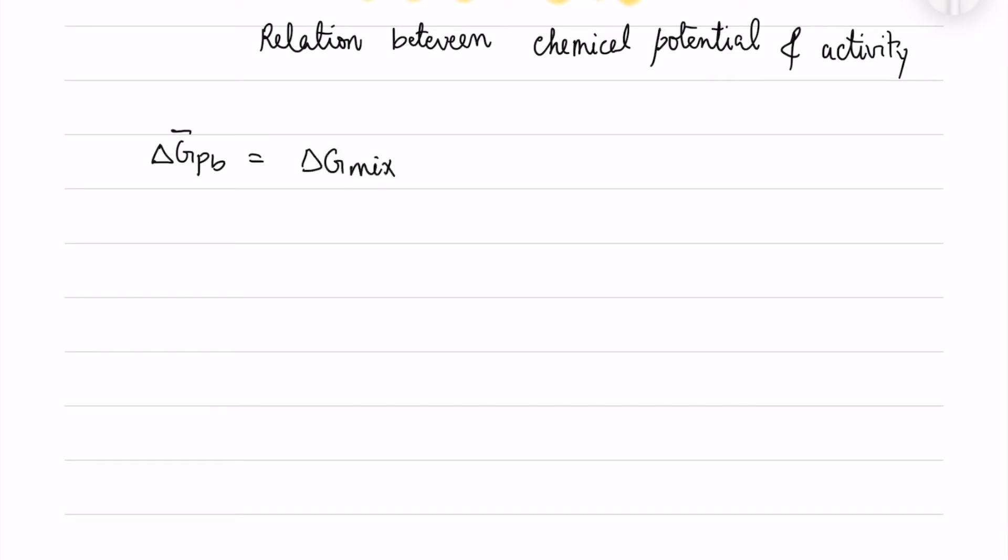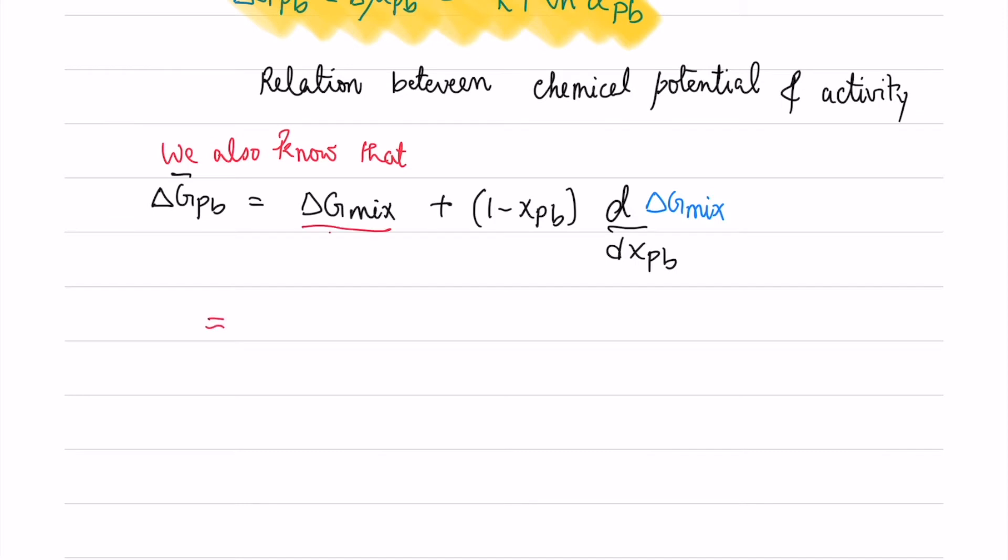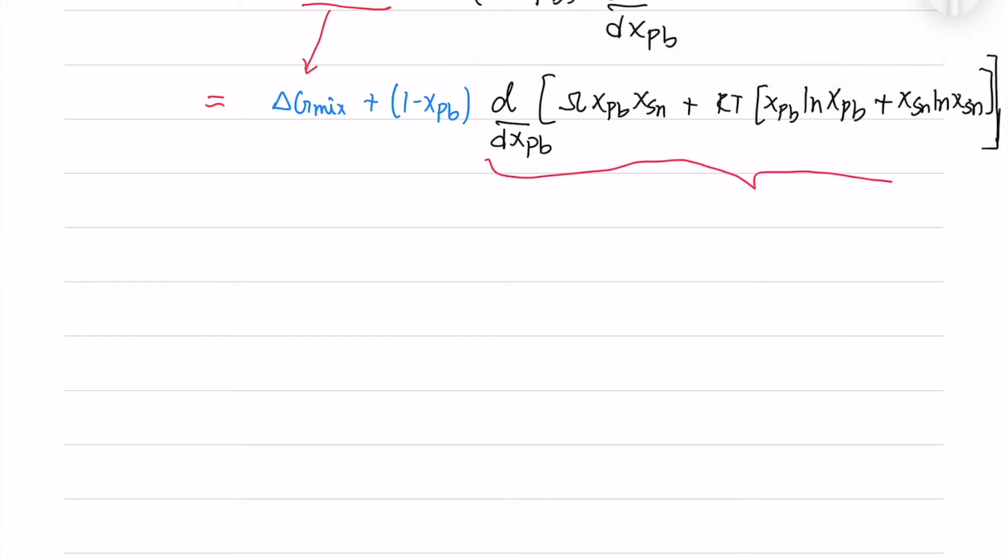We also know how to derive the partial molar Gibbs energy of the chemical potential of an element using this formula. Now we will take the delta G-mix as it is and differentiate the delta G-mix first so that we can simplify it later. When I do the differentiation, I take the individual terms. You can do it yourself and get the same answer.